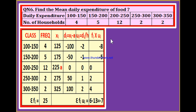Now fi × ui: 4 into minus 2 is minus 8; 5 into minus 1 is minus 5; 12 into 0 is 0; 2 into 1 is 2; 2 into 2 is 4. Adding positive values: 2 plus 4 is 6. Adding negative values: minus 8 plus minus 5 is minus 13. 6 minus 13 is minus 7. Sigma fi·ui = minus 7, and sigma fi = 25.